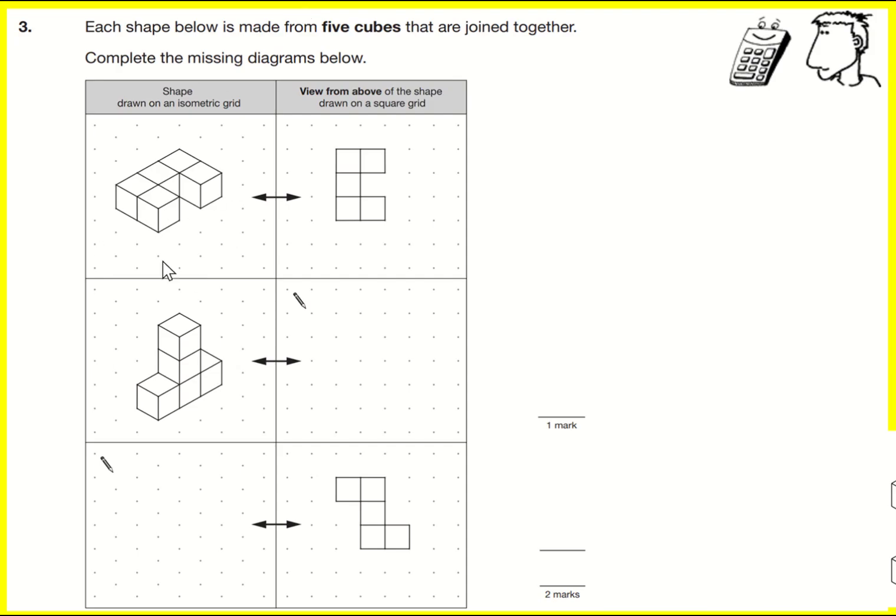We've got five cubes drawn on isometric paper and then we're drawing on normal square paper the view from above. Let me just talk about that a little bit more. If I'm looking from above, I see these squares here. I wouldn't actually see any of the rest of it, so you can see they're the same.